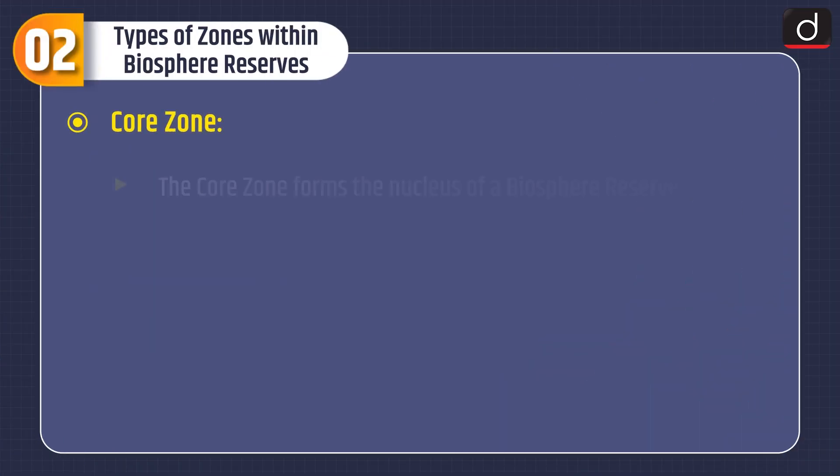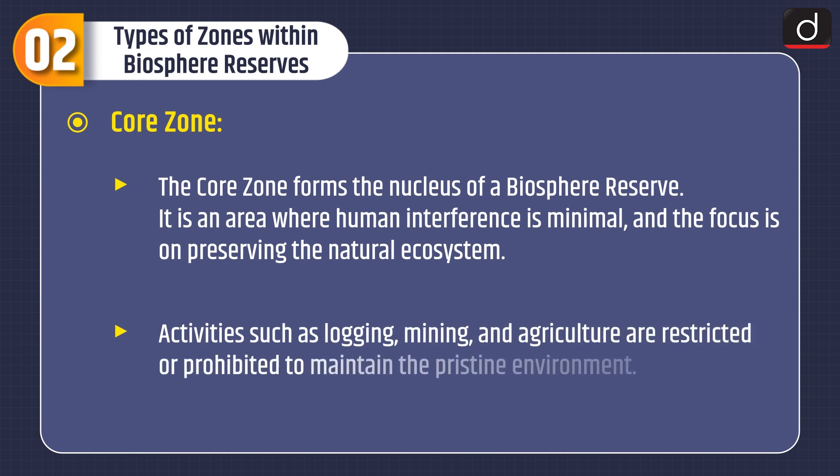Now let's know the types of zones within Biosphere Reserves. The first is the Core Zone. The core zone forms the nucleus of a Biosphere Reserve. It is an area where human interference is minimal and the focus is on preserving the natural ecosystem. Activities such as logging, mining, and agriculture are restricted or prohibited to maintain the pristine environment.